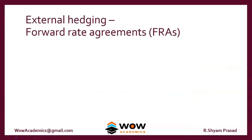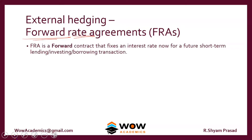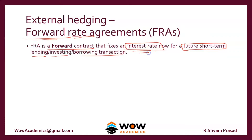We move on to the FRA. Forward rate arrangements are an application of the forward contract to interest rates. An FRA is a forward contract that fixes an interest rate now for a future short-term lending, investing, or borrowing transaction. Essentially, an FRA is a forward contract where the underlying is the interest rate — a very important concept.